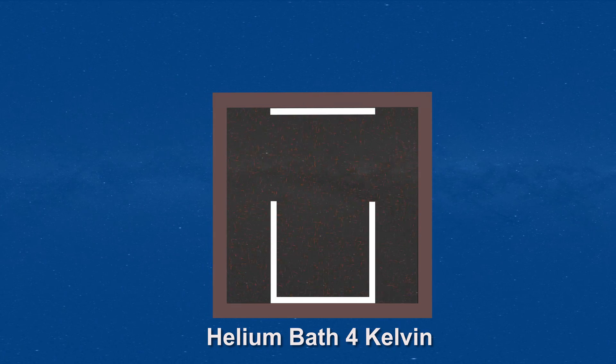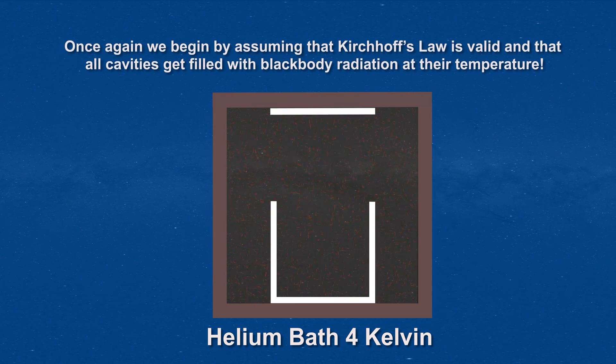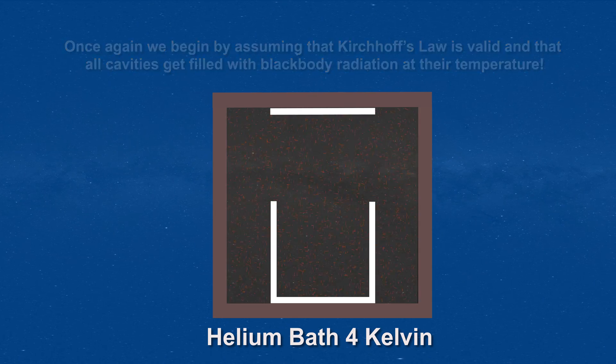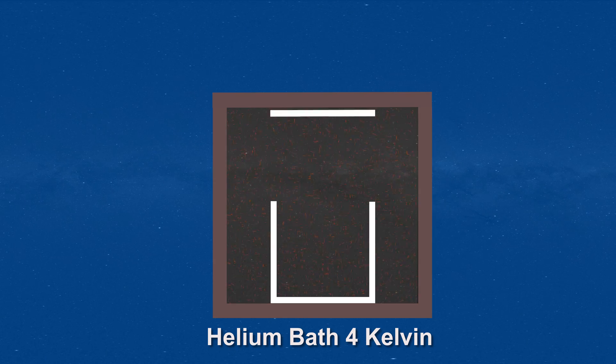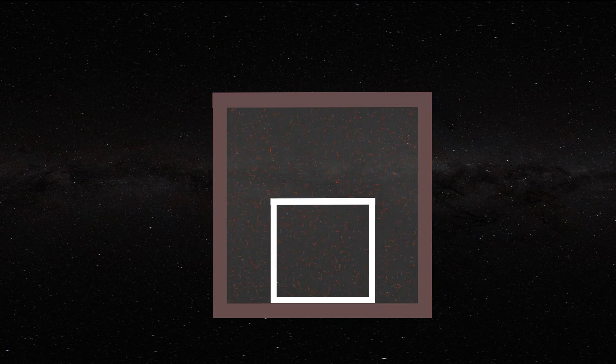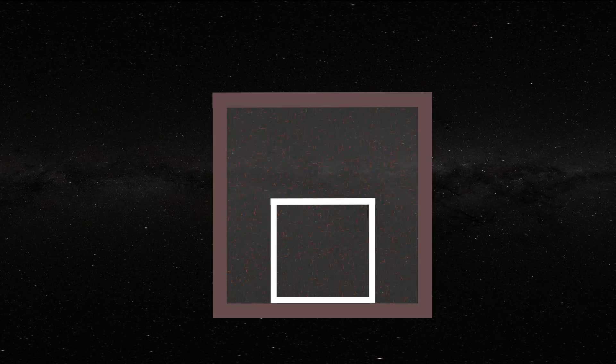Initially both boxes contain black body radiation at 4 kelvin since they are in thermal equilibrium with the helium bath and since the large box has an emissivity of one. Now we close the wall of the small cavity and remove the two boxes from the helium bath, allowing them to come to room temperature.